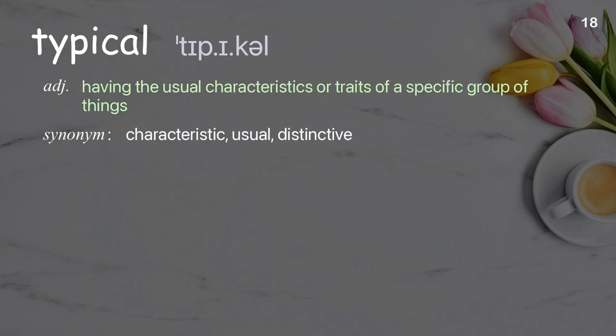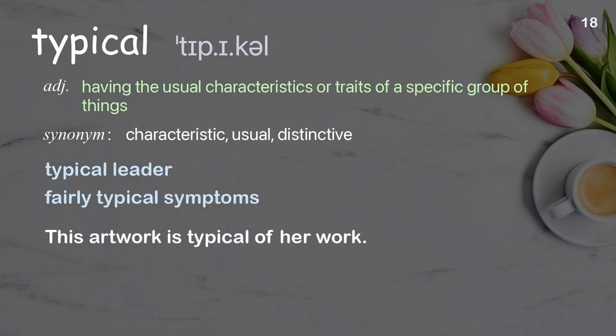Typical: having the usual characteristics or traits of a specific group of things. Examples: typical leader, fairly typical symptoms. This artwork is typical of her work.